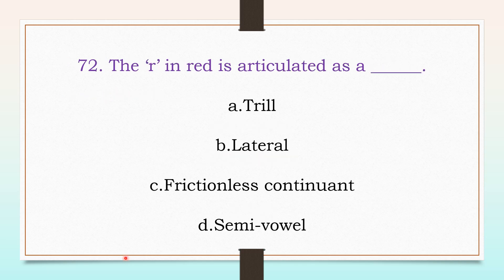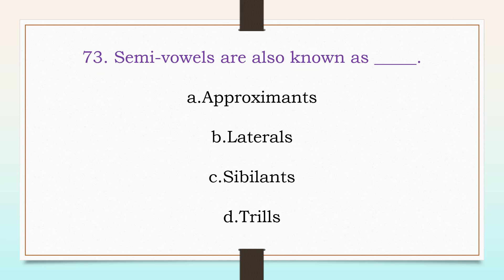The R in 'red' is articulated as a: trill, lateral, frictionless continuant, or semi-vowel? The answer is: trill. Semi-vowels are known as: approximants, laterals, sibilants, or trills? The answer is: approximants.